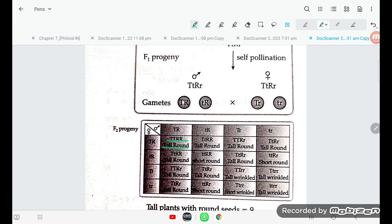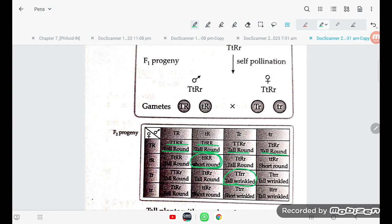Looking at the combinations: tall round, tall round, tall round. Here is short round. And another will be tall wrinkled. These are the new types of traits that you're getting - tall round, short round, and tall wrinkled. These are the new combinations.